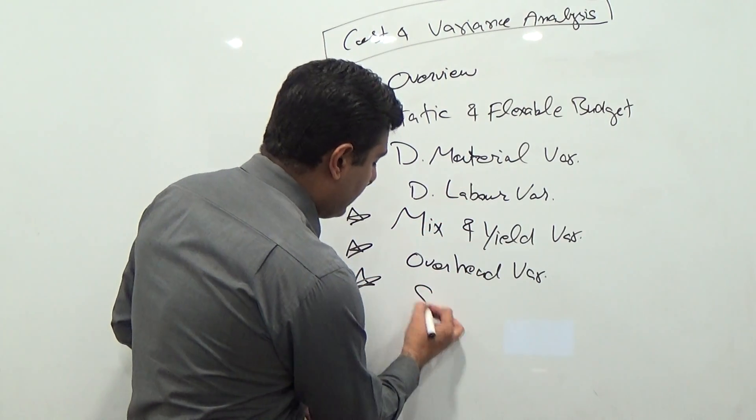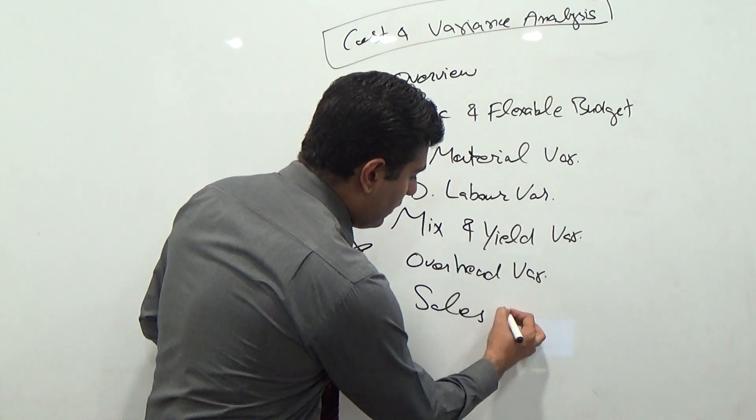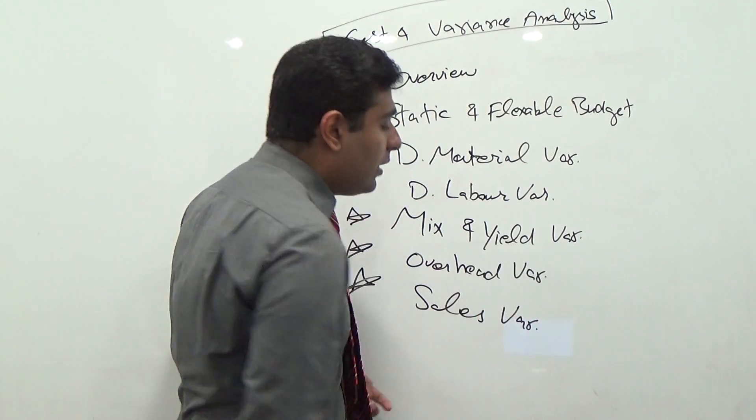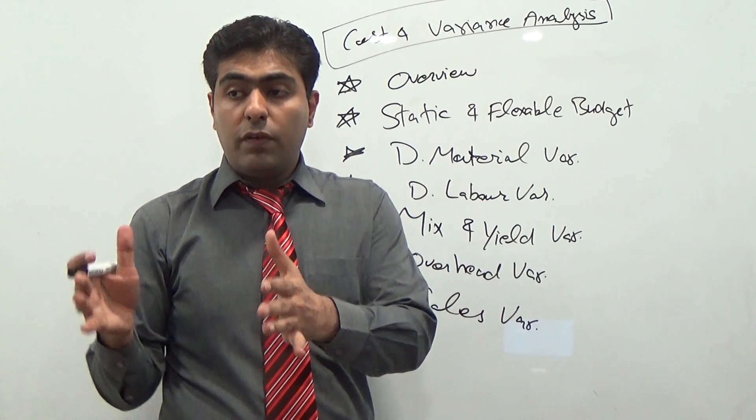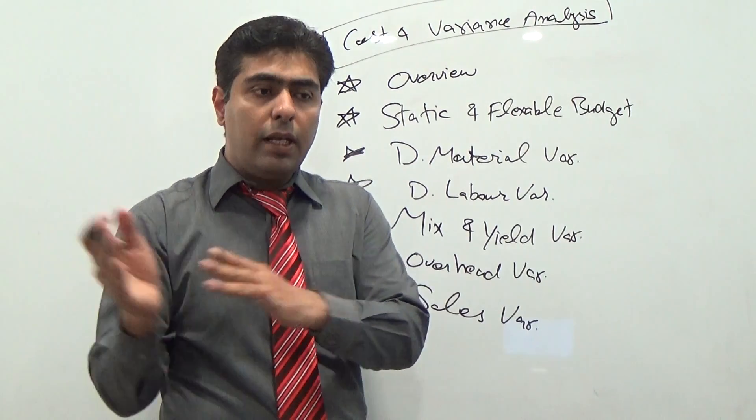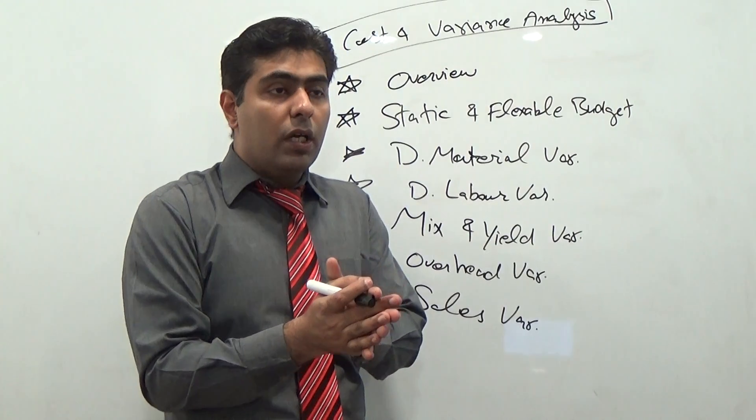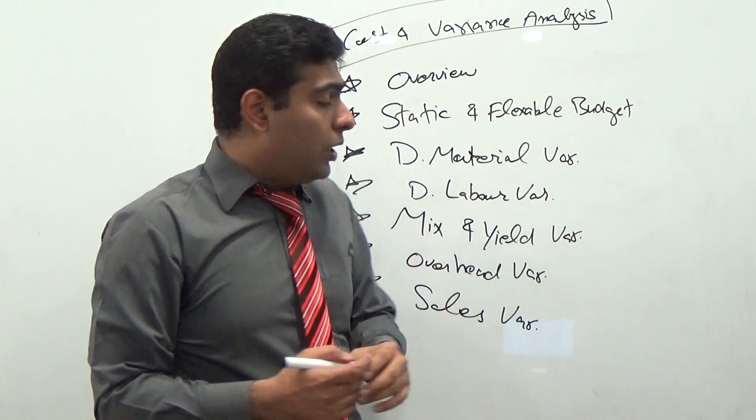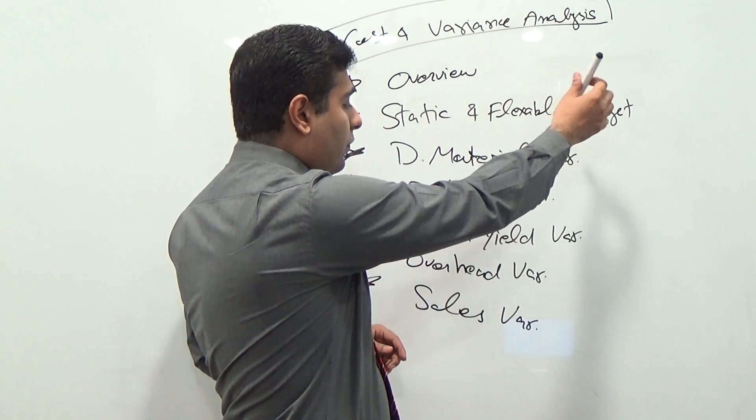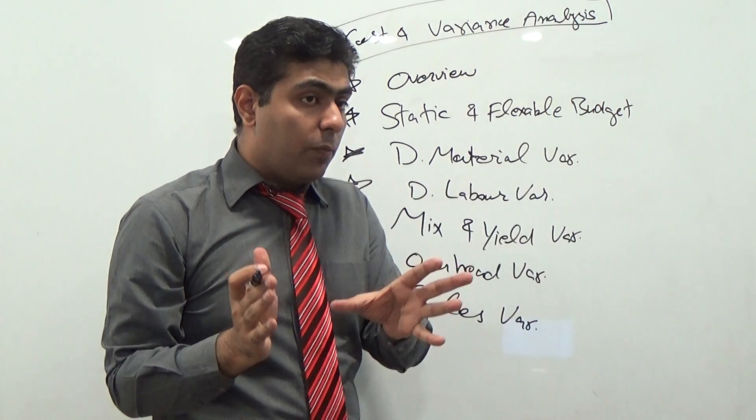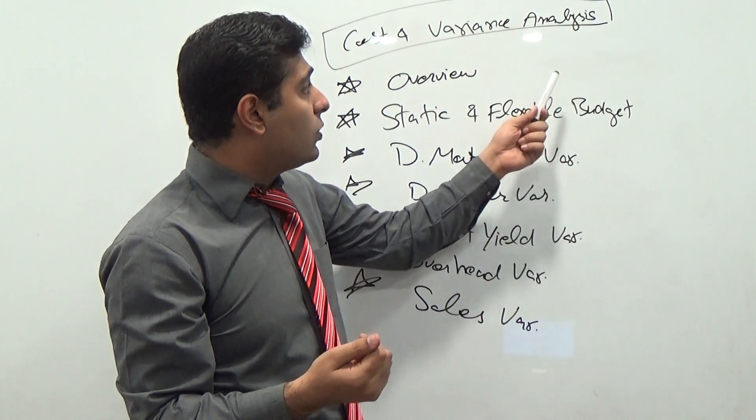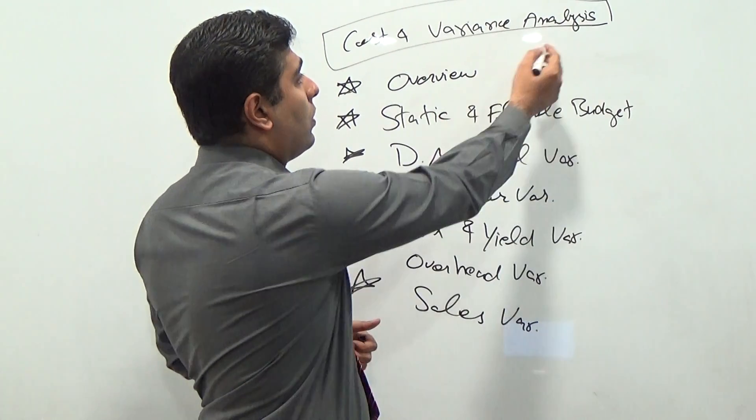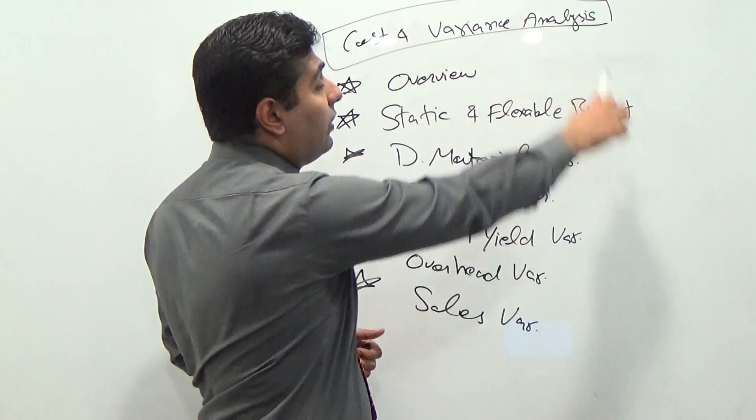Extremely important is basically sales variances. That means in terms of number of units, how many units we budgeted last year and actually how many units we were able to sell. Not only in terms of number of units, but also in terms of dollar amount as well. So that is extremely important in order to understand the cost and variance analysis.